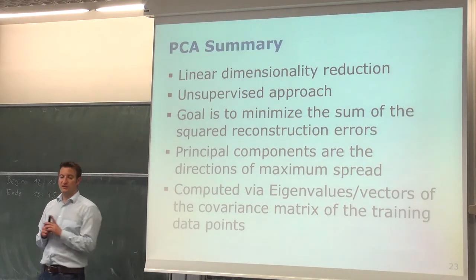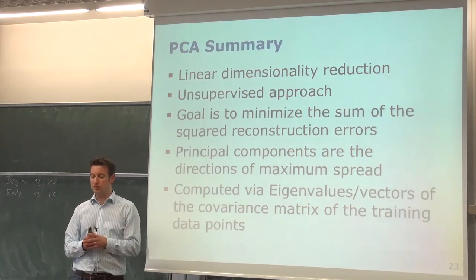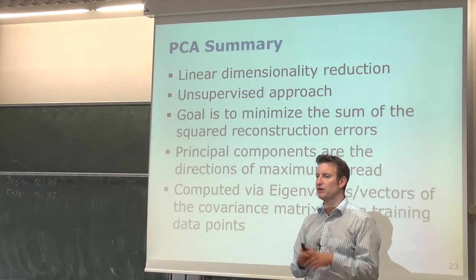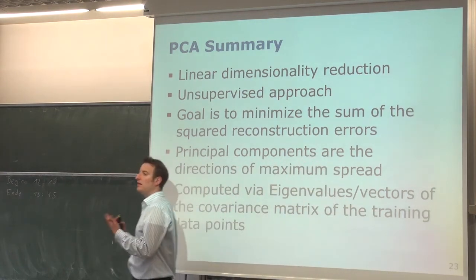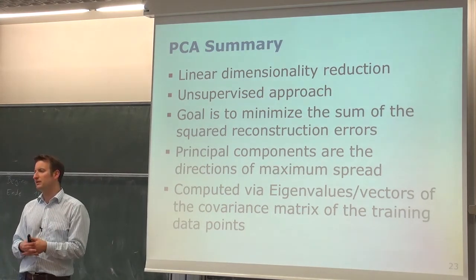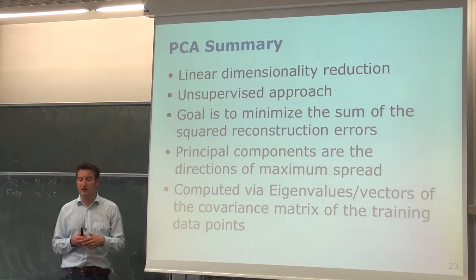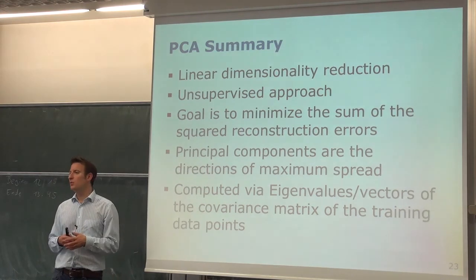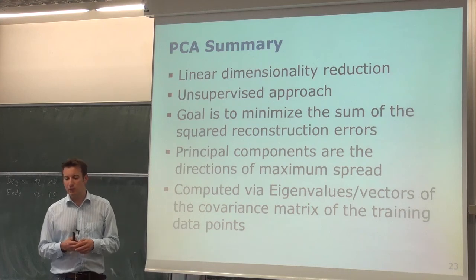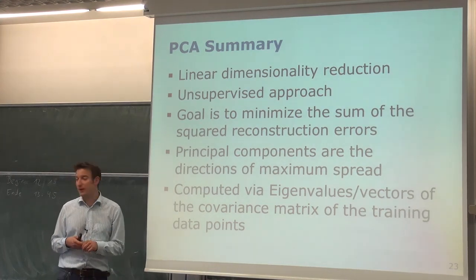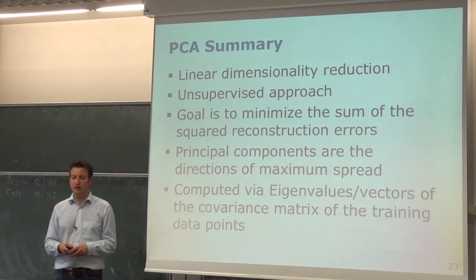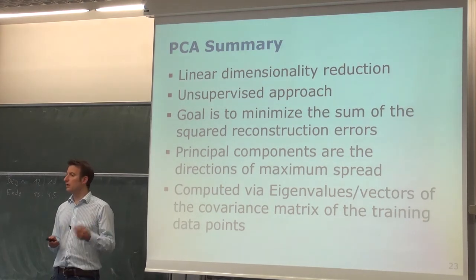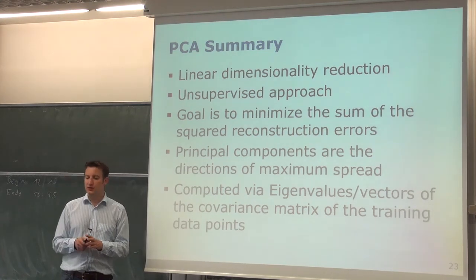To summarize: PCA is a linear dimensionality reduction technique — a linear mapping to a low-dimensional space. It is an unsupervised approach: it does not use any class labels, just the data points themselves. It assumes the distribution can be well approximated by a Gaussian, making it sensible to use the covariance matrix to describe the spread. PCA selects dimensions along maximum spread, minimizing the sum of squared reconstruction errors. In practice, most computational effort goes into computing the eigenvalues and eigenvectors of the covariance matrix.